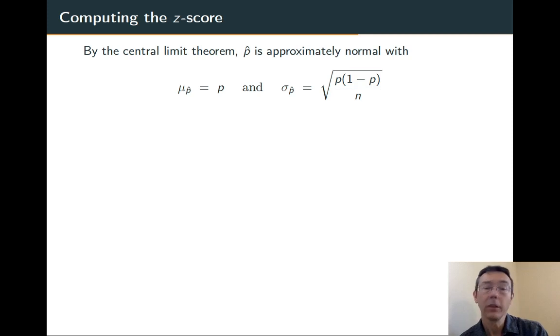So the central limit theorem says that when n is large, and here n is plenty large, the sampling distribution of the proportion p-hat is going to be approximately normal, with mean equal to the population mean p, and standard deviation equal to the square root of p times 1 minus p over n.